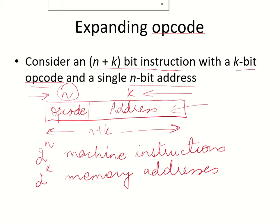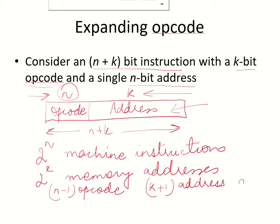Suppose I change this n plus k instruction to one having n minus 1 bits for the opcode and k plus 1 bits for the address. In this case the instruction length is still the same — we are not changing it, we are simply changing the bits allocated to the opcode and the address.